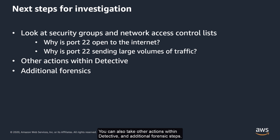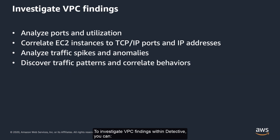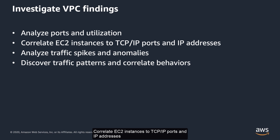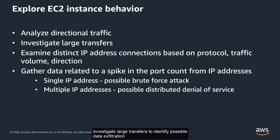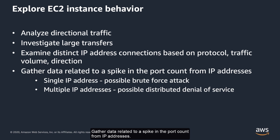You can also take other actions within Detective and additional forensic steps. To investigate VPC findings within Detective, you can analyze ports and utilization, correlate EC2 instances to TCP/IP ports and IP addresses, analyze traffic spikes and anomalies, and discover traffic patterns and correlate behaviors. You can also use Detective to explore EC2 instance behavior: conduct directional traffic analysis, investigate large transfers to identify possible data exfiltration, examine distinct IP address connections based on protocol, traffic volume and direction, and gather data related to a spike in the port count from IP addresses. A spike in a single IP address could indicate a brute force attack; a spike in multiple IP addresses could indicate distributed denial of service.